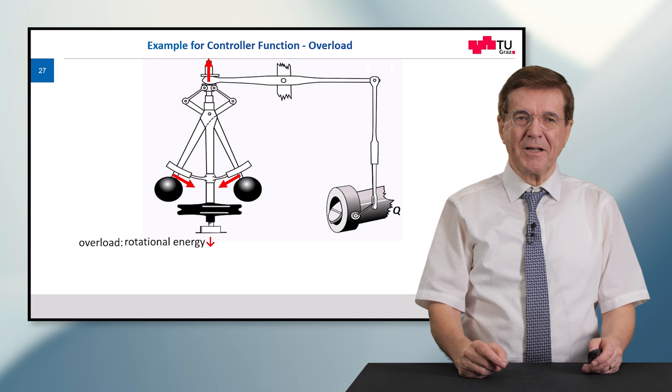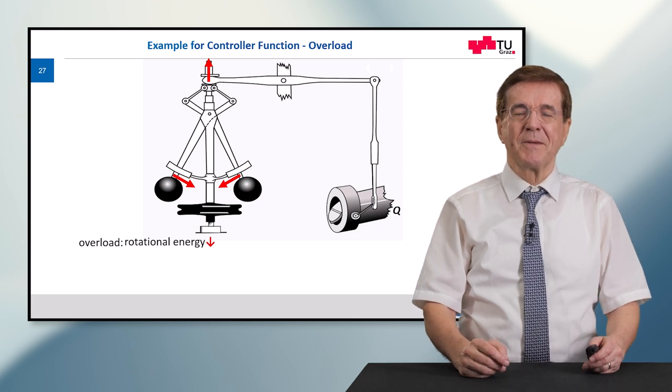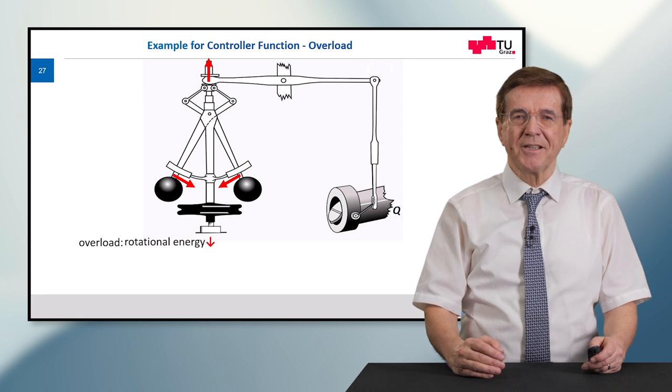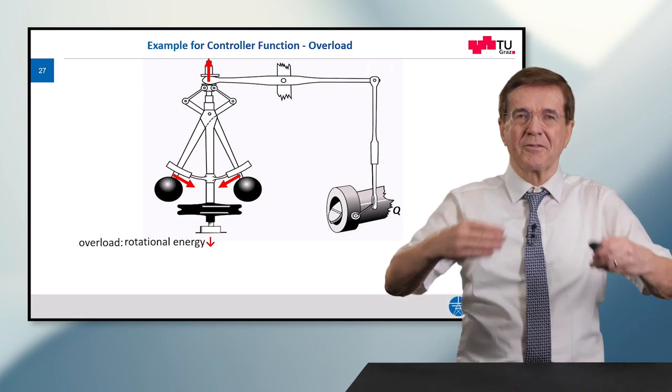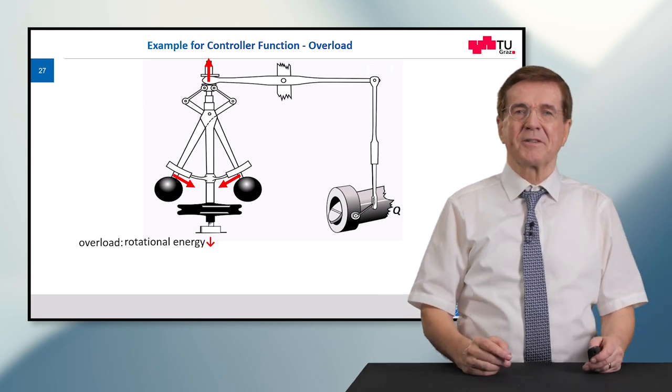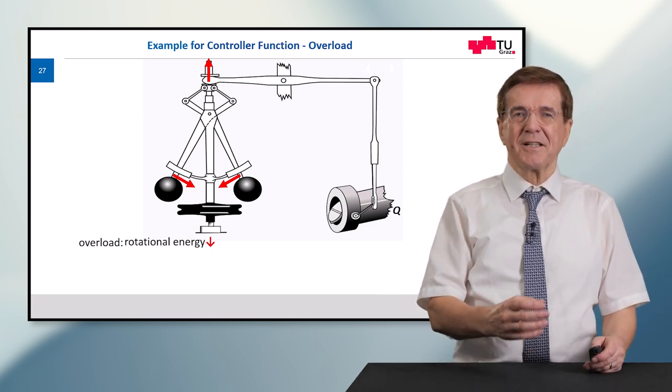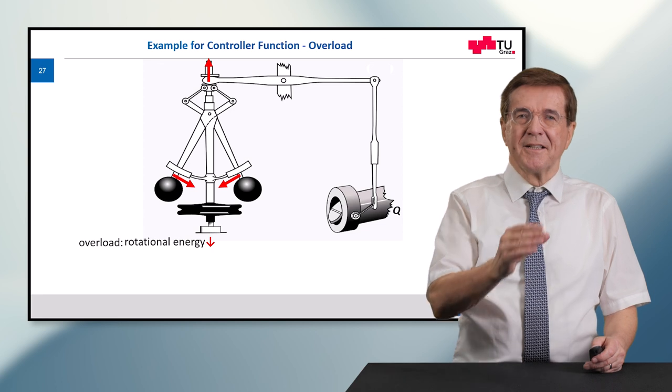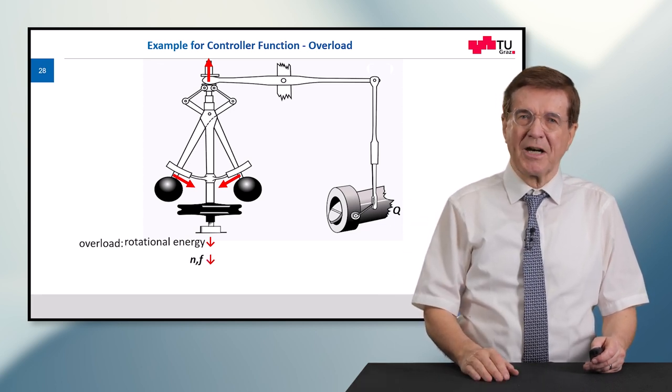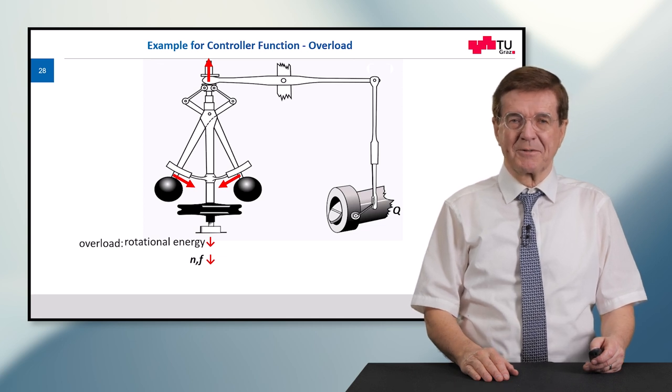So what happens if we have an overload? Overload means too much load, too little input, and this means the rotational energy of all the machines that run—the turbines, the generators—all this rotational energy is used in the first very second to come up for this deficiency. The speed will go down and the frequency, the network frequency, will go down.